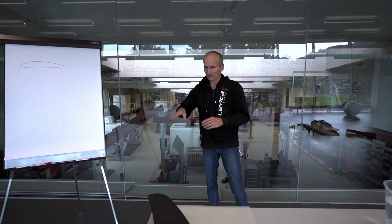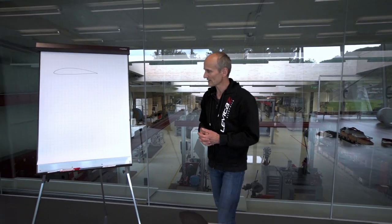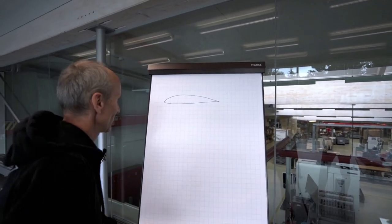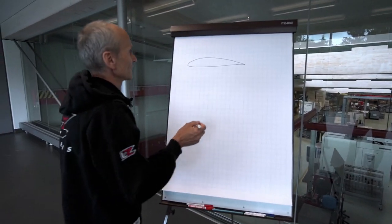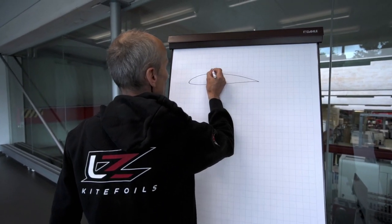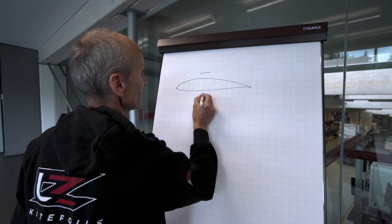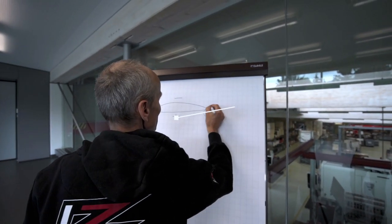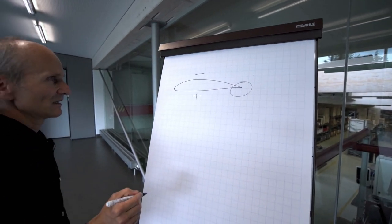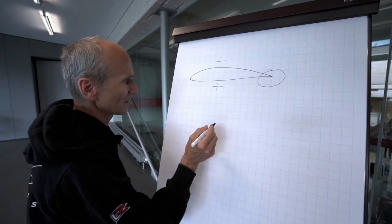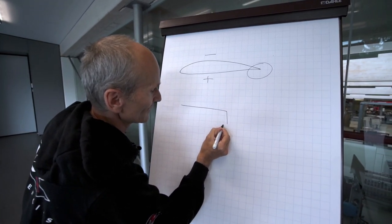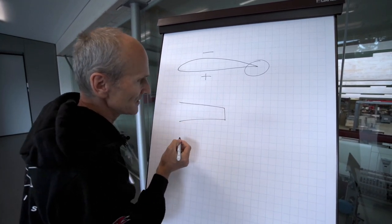So first of all we have a look at the profile section. Let's say this is the profile section of a front foil. On the top side we have the suction side and here we have the pressure side. And if we take a closer look here to the trailing edge, we find maybe a trailing edge which looks like this.